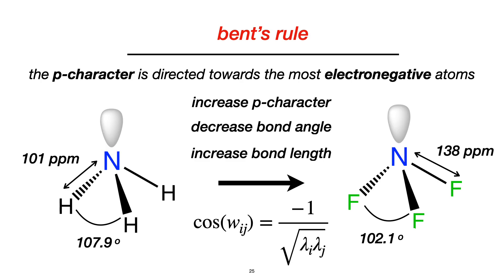Hybridization interplays with other different chemical properties, like electronegativity. In this case, we have stated Bent's rule, which says that the p character is directed towards the most electronegative atoms. To illustrate this, we will compare ammonia and nitrogen trifluoride. We know that fluorines are more electronegative than hydrogens, and as we substitute hydrogens by fluorines, we can note an increment in the bond length of the nitrogen bonds because the s character decreases. We also see the bond angle between the nitrogen and the adjacent atoms decreases, which is automatically derived from Bent's rule and stated in the equation called Coulson's theorem.